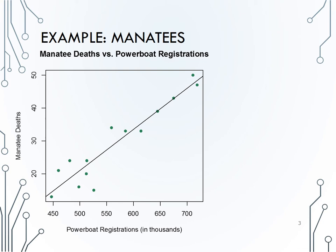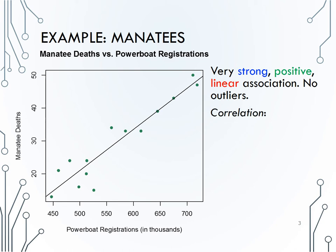We see a linear form, a positive direction, a fairly strong relationship, and no outliers. That being said, what would you guess for the correlation coefficient?